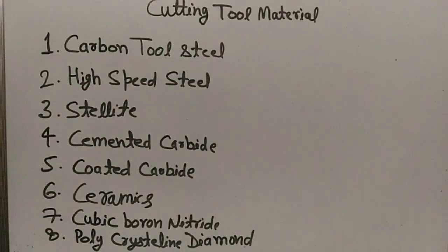The materials that are used as cutting tool materials are: carbon tool steel, high speed steel, stellite, cemented carbide, coated carbide, ceramics, cubic boron nitride, and polycrystalline diamond.